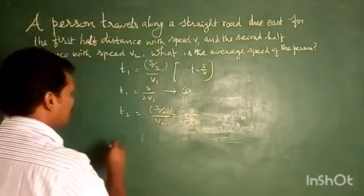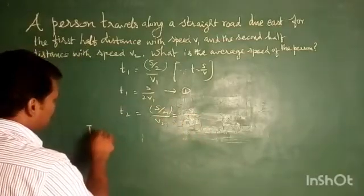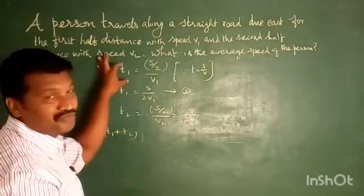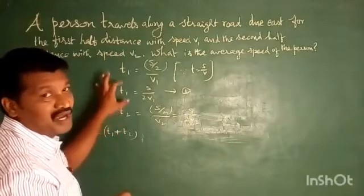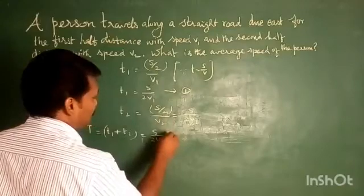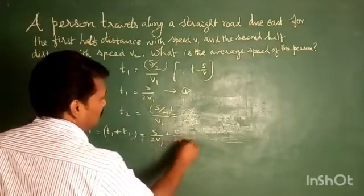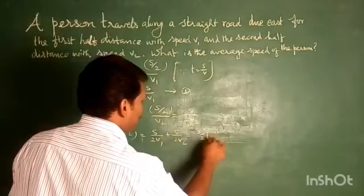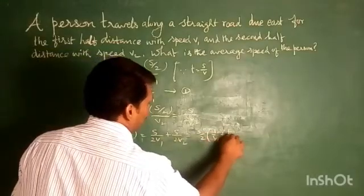Then total time is t equal to t1 plus t2, first half time plus second half time. So s by 2v1 plus s by 2v2. Here we can take s by 2 common: 1 by v1 plus 1 by v2.